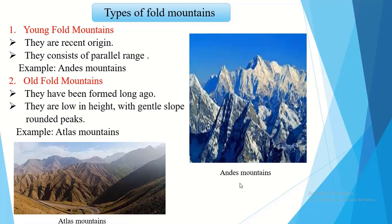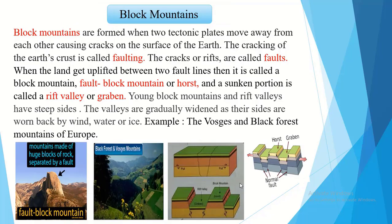Young fold mountains consist of parallel ranges. Examples include the Himalayas, Alps, Rockies and Andes. Old fold mountains have been formed long ago and have undergone erosion for millions of years. They are low in height with a gentle slope and rounded peaks. The Atlas Mountains and the Aravalli Hills of India are examples of old fold mountains.